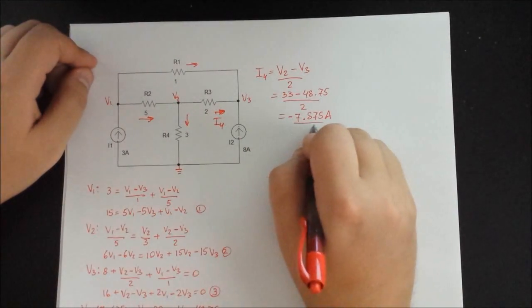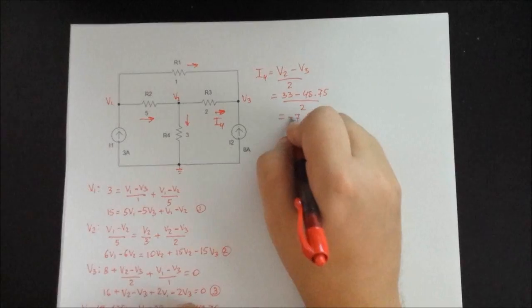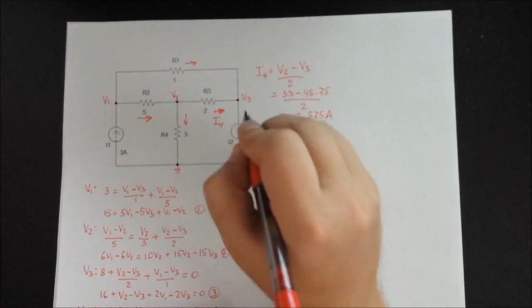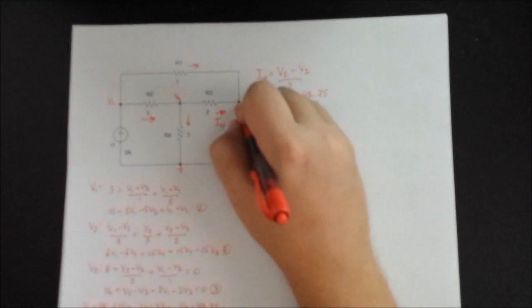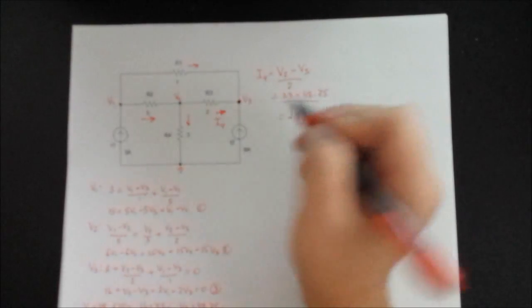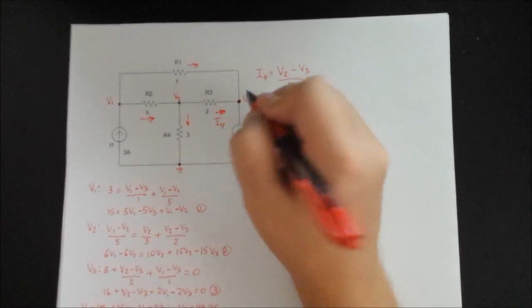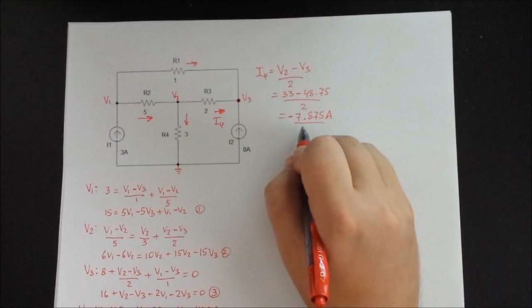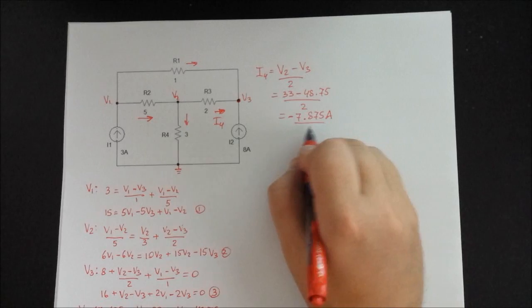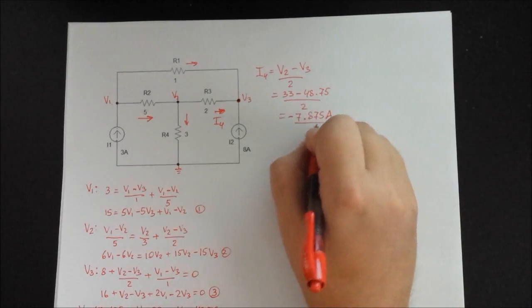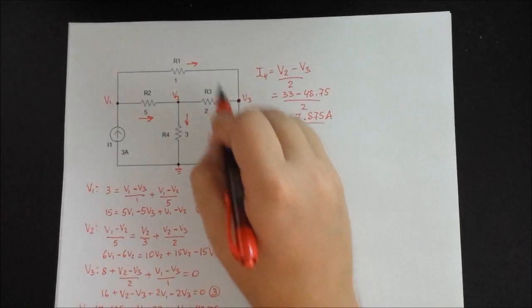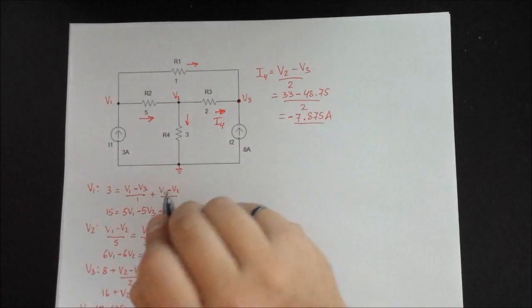And what this means is that the current is actually going the opposite way of the way that you had selected for your current. So you have to make sure that you understand what this minus means. So basically, as I had mentioned, we had three currents coming into our node, and as you know this is impossible. So one of them has to be negative, and you have to watch out. This is a very good way to check if you made the right decisions for the current and if your numbers are correct. So one of these had to be negative.